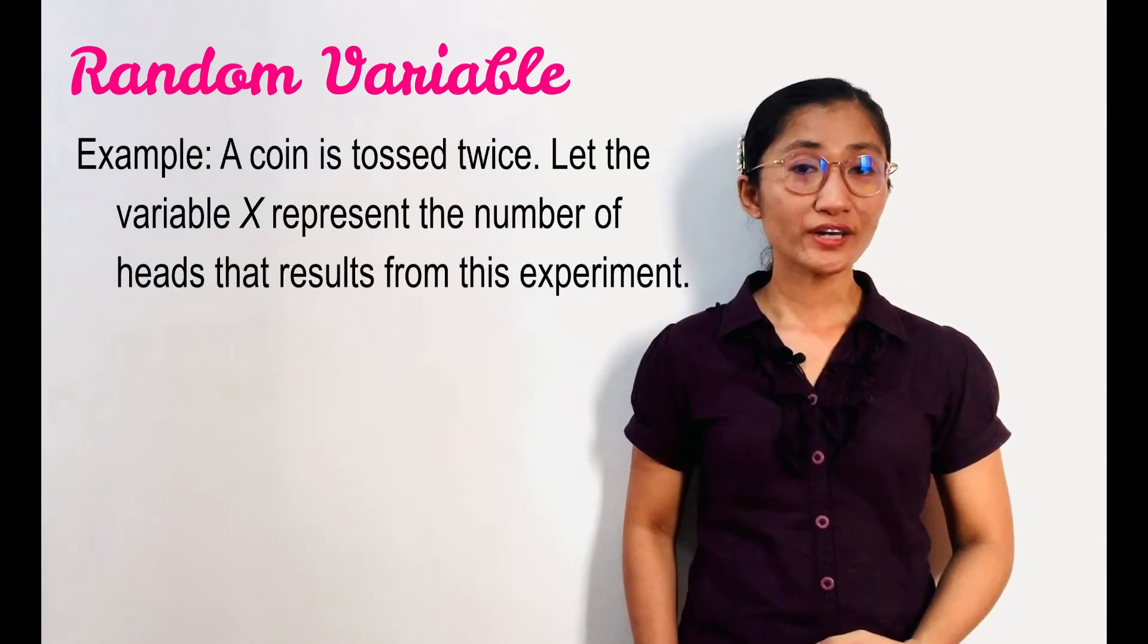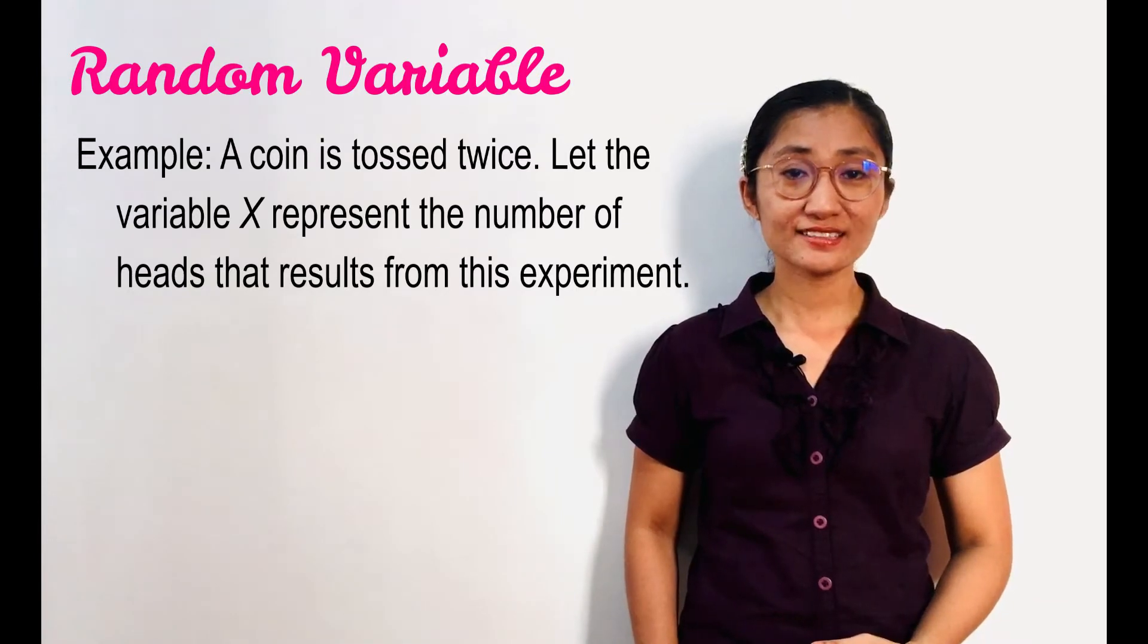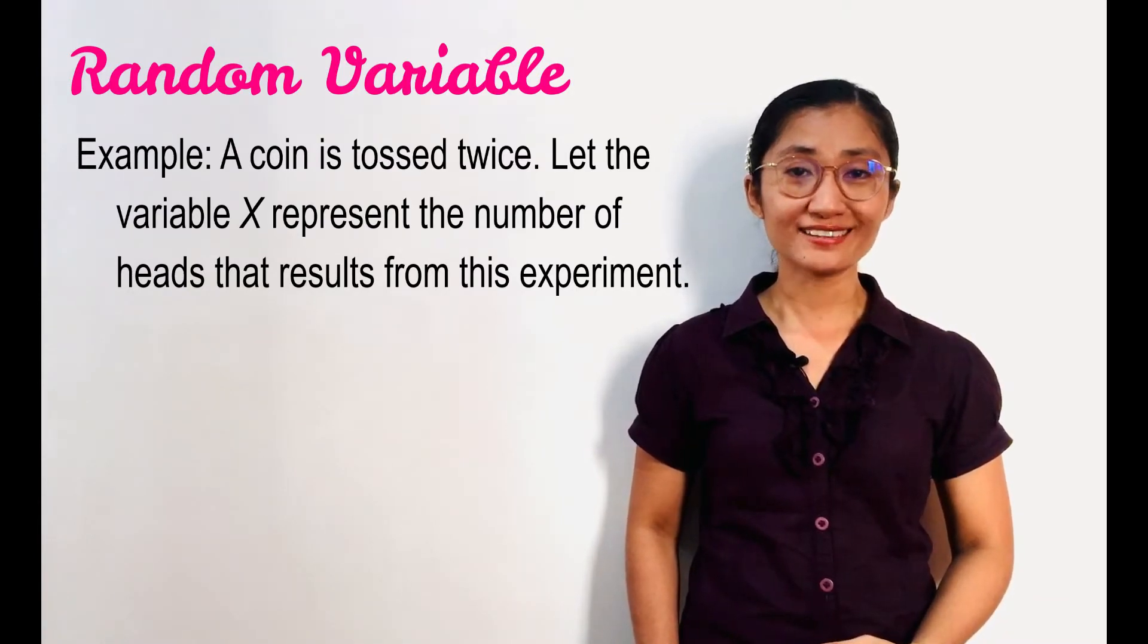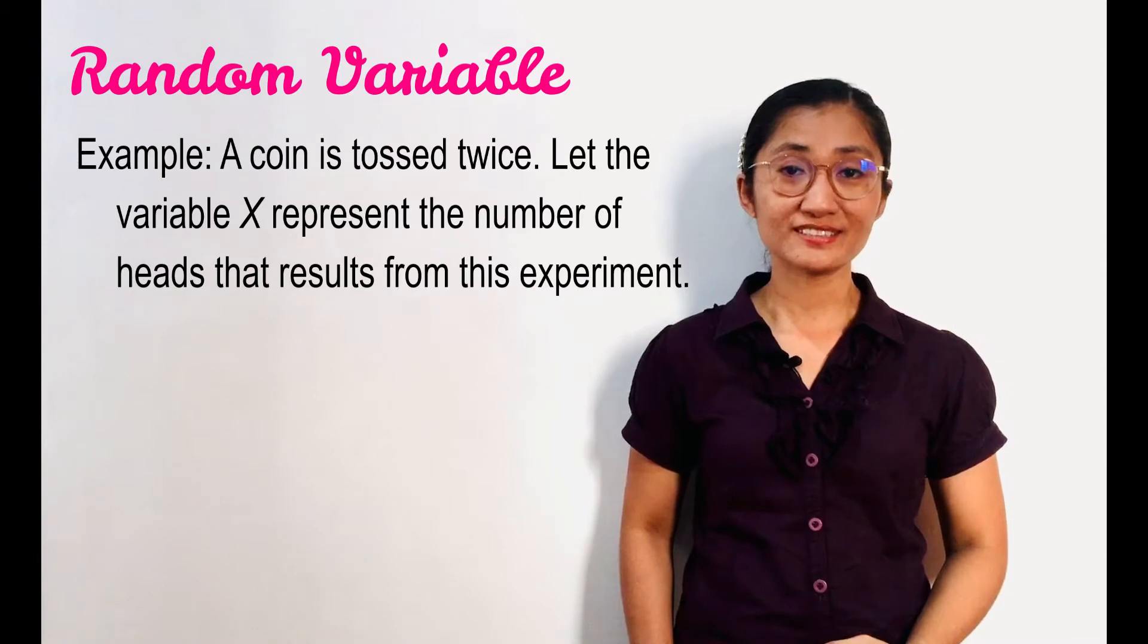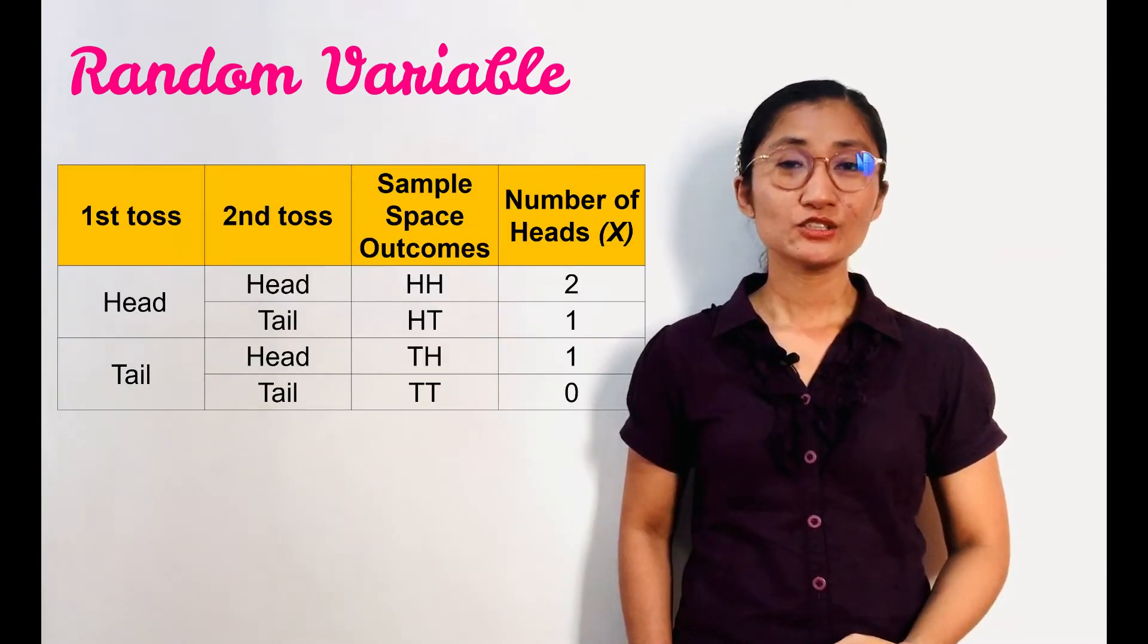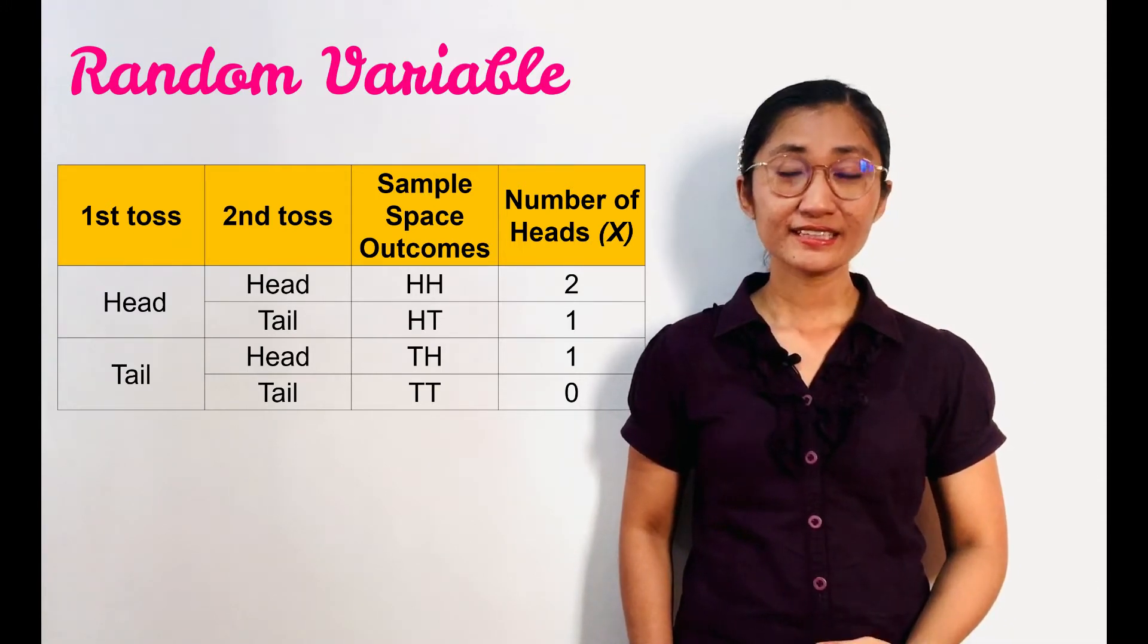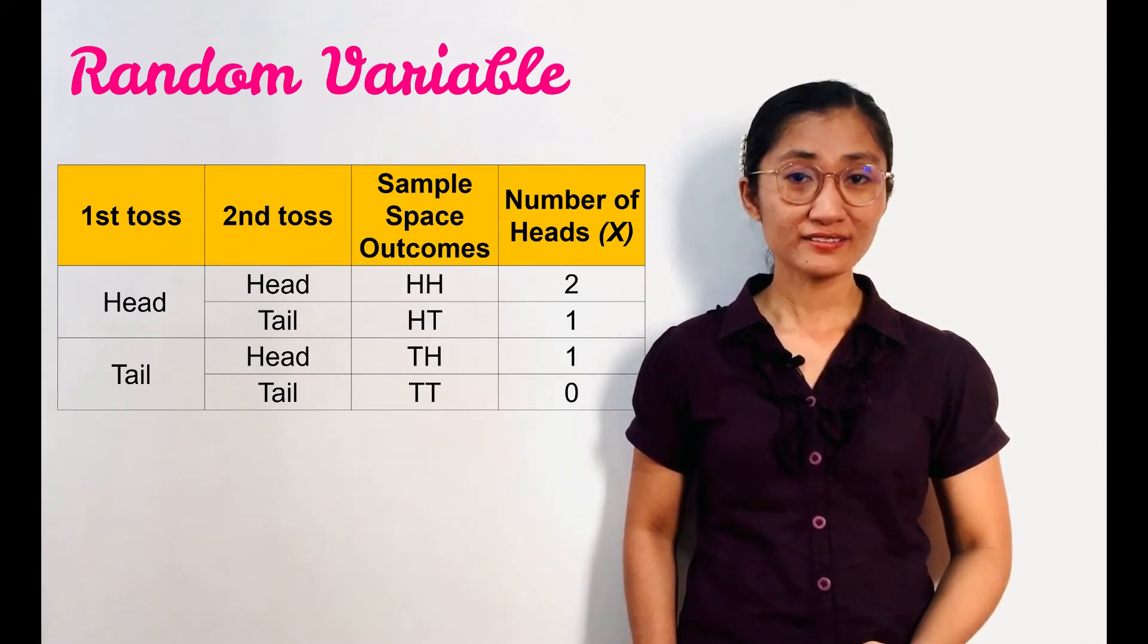Let us take for example the following problem. A coin is tossed twice. Let the variable X represent the number of heads that results from this experiment. The table beside me shows that the values of the random variable X can be 0, 1, and 2.